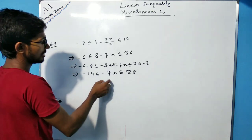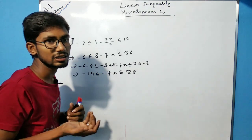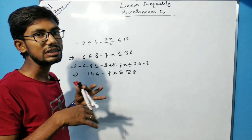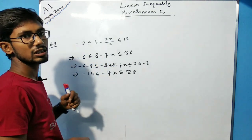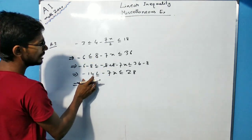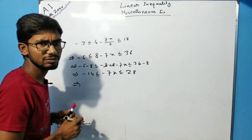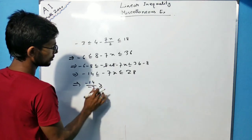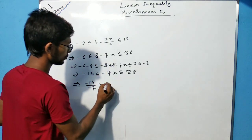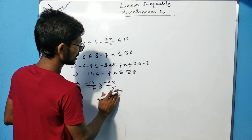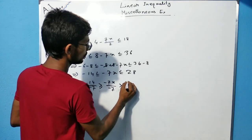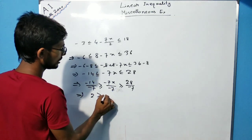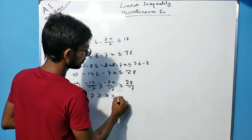Now, see here — there is a negative sign. If we multiply or divide by a negative number, then the linear inequality sign will change. If it is greater than or equals to, it becomes less than or equals to, and vice versa. So from that property, dividing by minus 7: minus 14 by minus 7 is greater than or equals to minus 7x by minus 7, which is greater than or equals to 28 by minus 7. This gives 2 is greater than or equals to x, which is greater than or equals to minus 4.